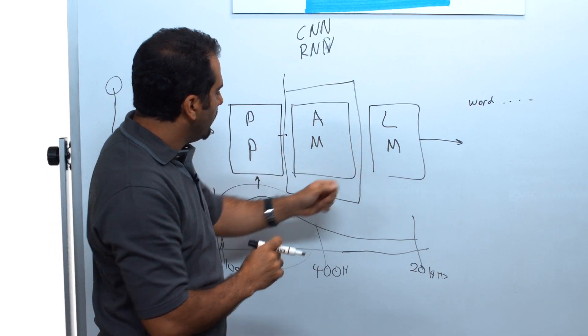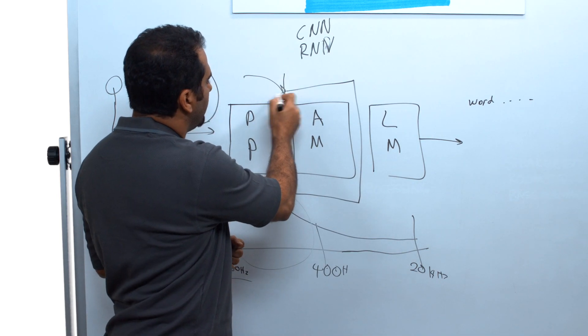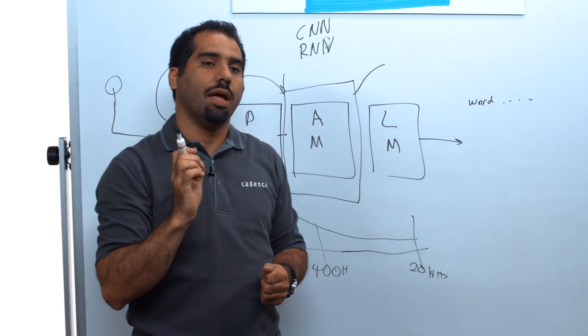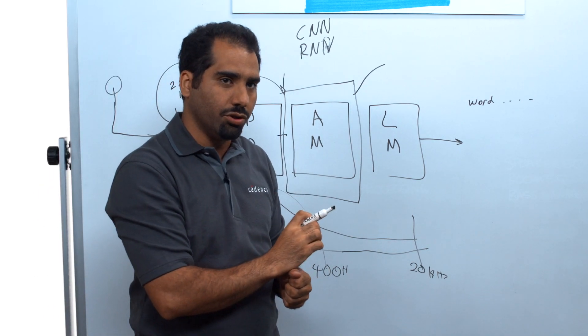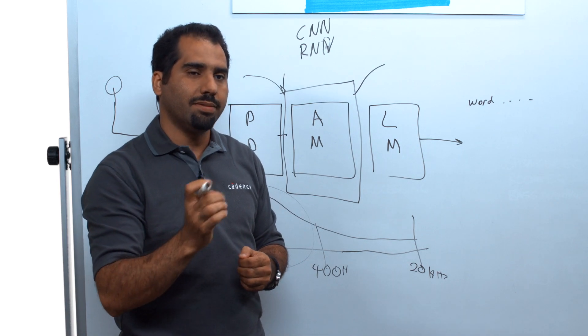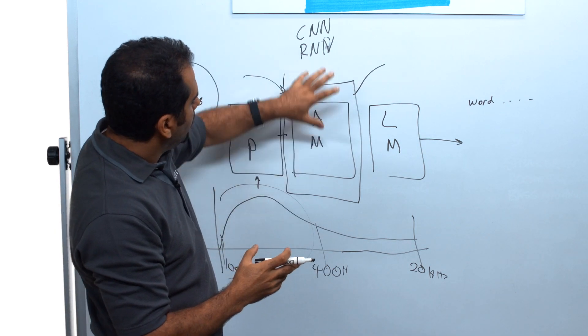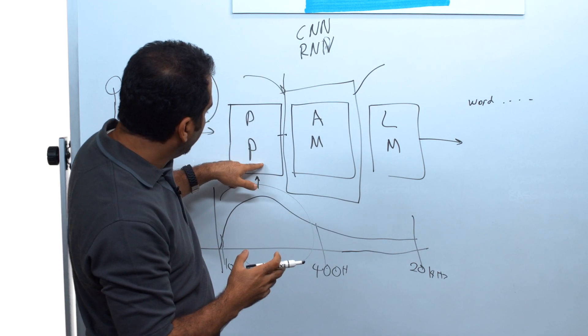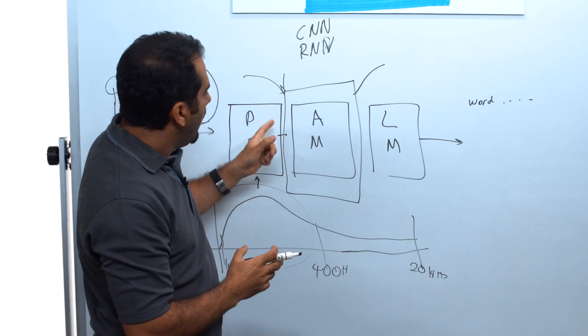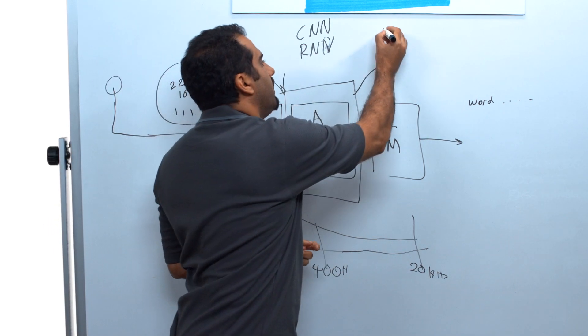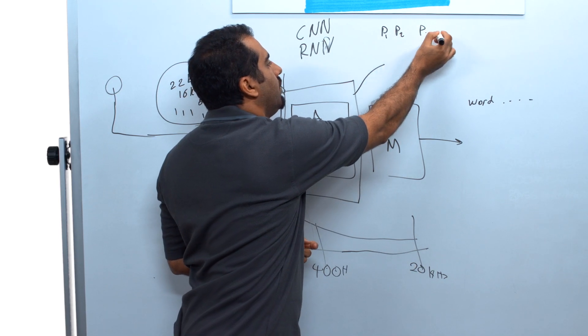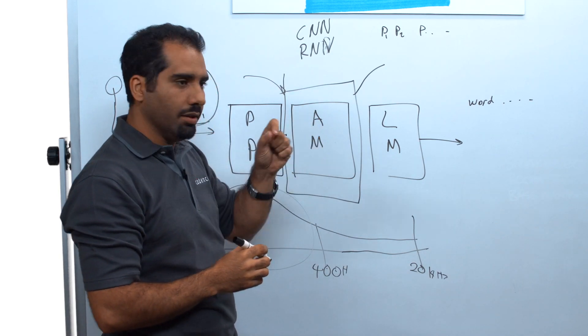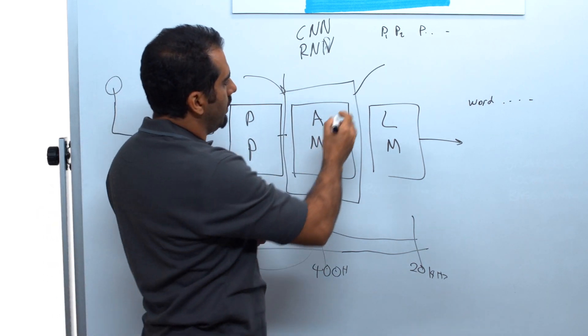In short, this acoustic model takes the enhanced features from the input and produces a sequence of probability of the abstract components of human speech. What are these abstract components? Phonemes and characters. So I repeat, the acoustic model, using advanced machine learning techniques, takes that enhanced feature as being presented by the pre-processing, and produces a sequence of probabilities, p1, p2, p3, all the way, of the primary abstract components of human speech, that is phonemes and characters.